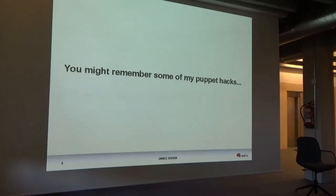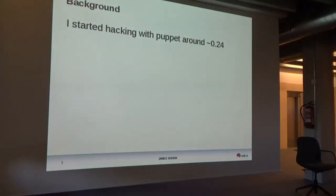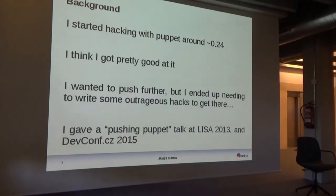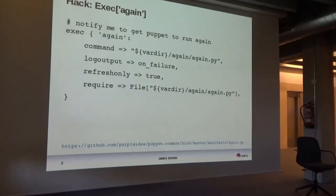People might remember some of my old Puppet hacks. I started hacking with Puppet quite a long time ago. I wanted to build very powerful autonomous systems using Puppet. It turns out in Puppet you can do all sorts of absurd things. I found out you can actually do recursion in Puppet. Puppet runs every 30 minutes, but using a double-fork exec resource trick you can run it again right away.